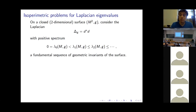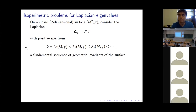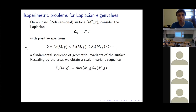Our setting is pretty simple: we're working on a two-dimensional surface. Given a closed two-dimensional Riemannian surface, we think about the positive spectrum of the Laplacian, whose spectrum is this classical sequence of fundamental geometric invariants. If we rescale those invariants by the area, we get a scale-invariant sequence.